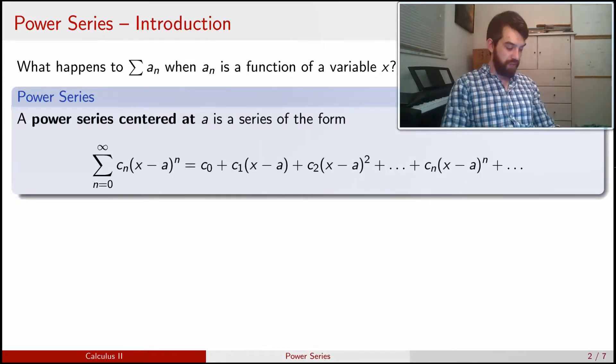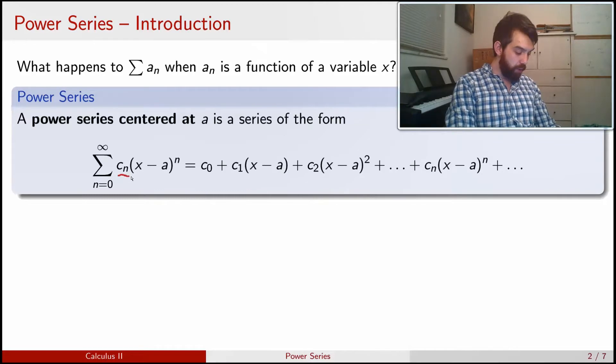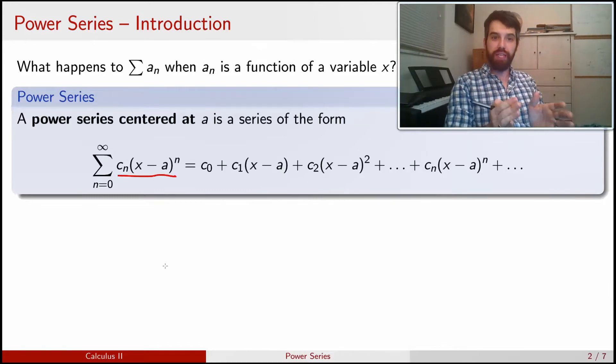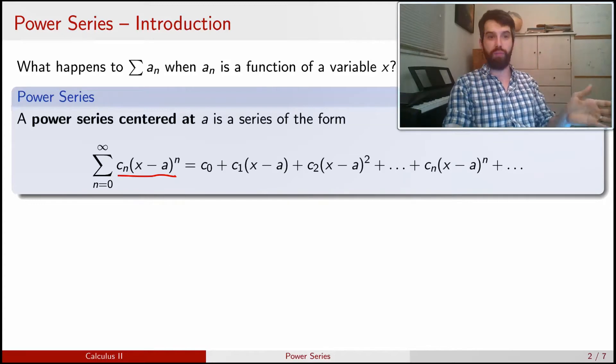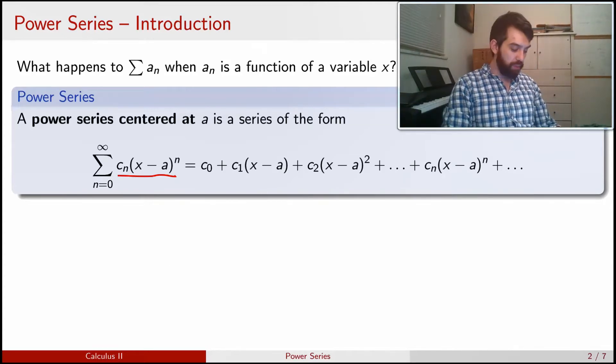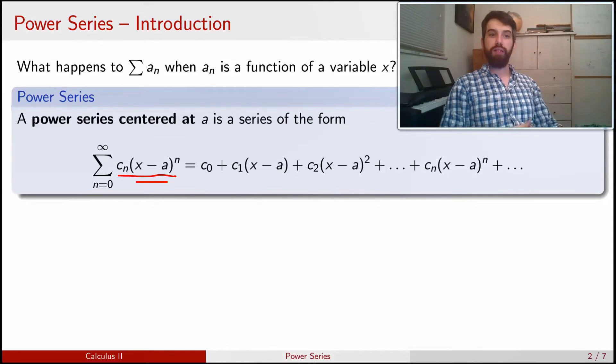So the form is going to be that the a_n can be written as some sequence c_n, where the c_n's really are numbers, a sequence just like we've been seeing in the past. But they're now multiplied by this (x - a) to the power of n business.